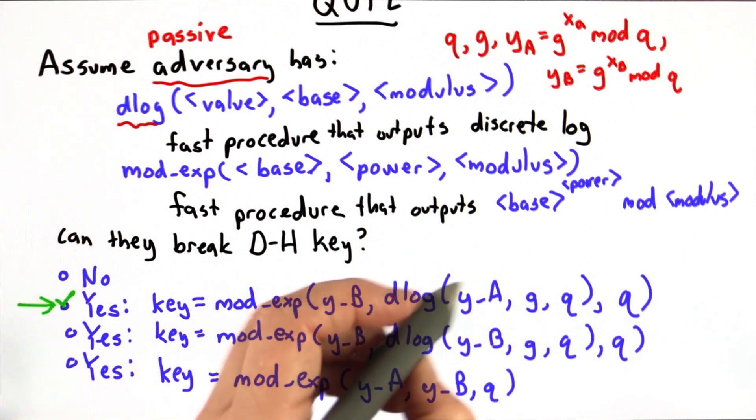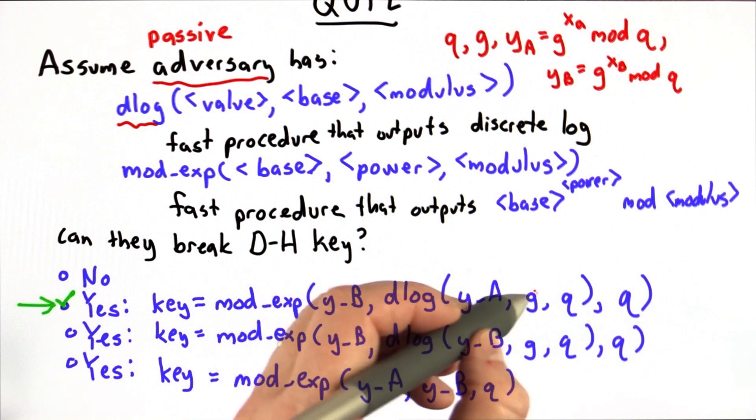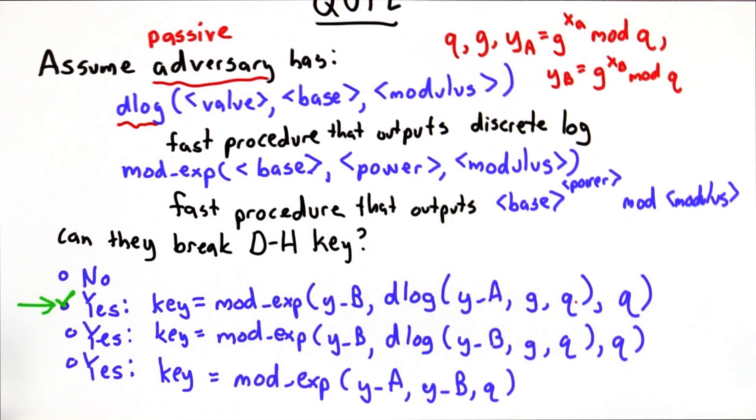well then they could compute the discrete log of the intercepted value y_a, the g and the q values, which were also intercepted. Those ones were public.